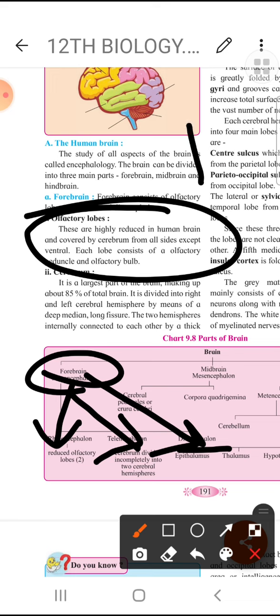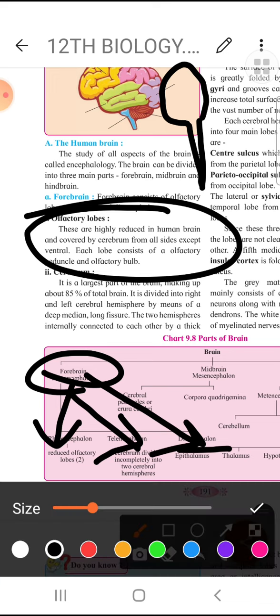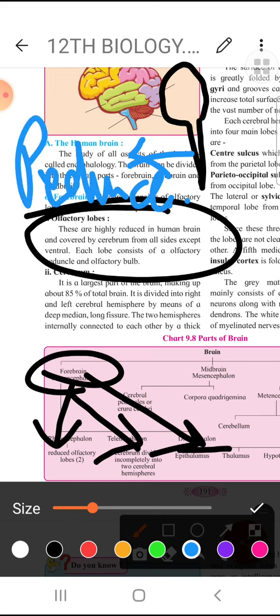This is how the structure of olfactory lobe is formed - this is the peduncle and this is the bulb. So you have two parts in it. The upper part is called olfactory bulb, and the lower extended part is called olfactory peduncle. This is the reduced form. Humans have it very reduced compared to some animals. Dogs have well developed olfactory lobes.